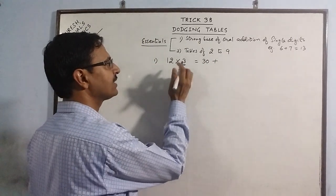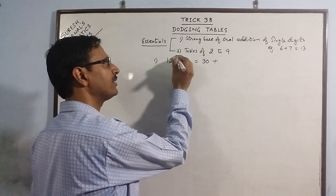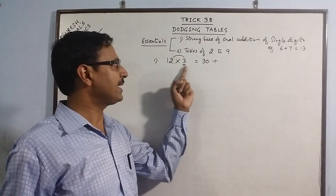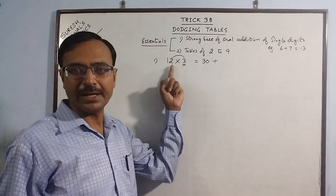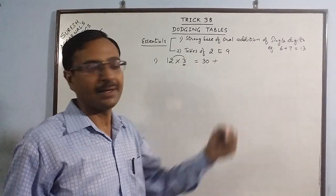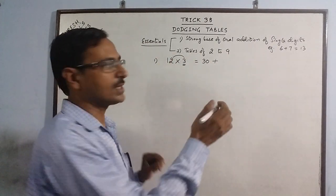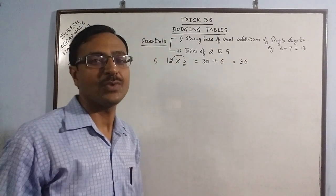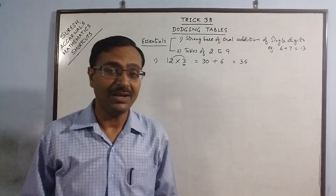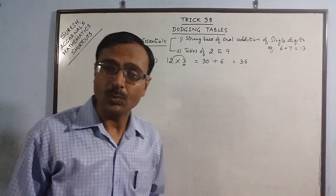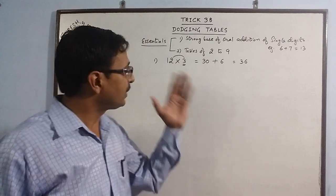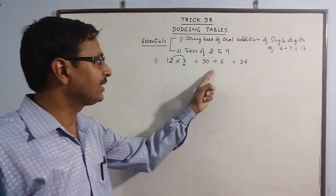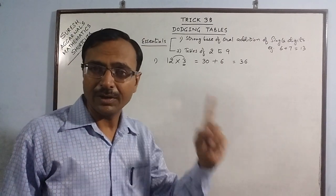Then he finds the product of this number with the ones place only. He forgets this 1 and multiplies this number with this only. Here comes the tables of 2 to 9. This is 3 into 2, 3 twos are 6. Now he just adds 30 and 6 which gives 36. If a parent teaches this well and the teacher brings in this concept at the right time, I think this can work wonders.